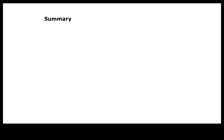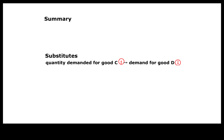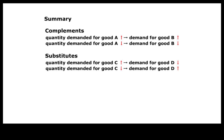To summarize: for complements, when the quantity demanded for good A goes up, demand for good B goes up — up, up; down, down. For substitutes, when the quantity demanded for good C goes up, demand for good D goes down — up, down; down, up.